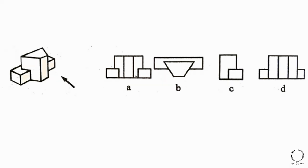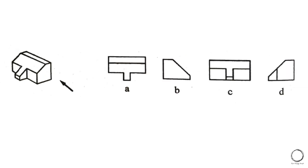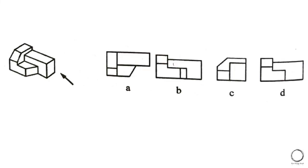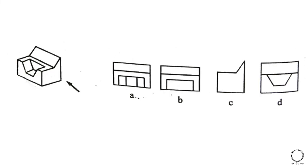Another inclined surface question: looking at the arrow, the right answer is option A. The two squares at both ends are intersecting in the middle plane, and hence the right answer is option A. Moving ahead to another inclined question, looking at the arrow, the right answer is option D. Start by counting the surfaces and noting their shapes to mark the right answer easily — here the right answer is option C.